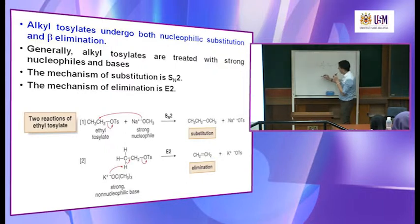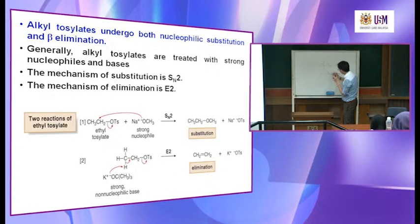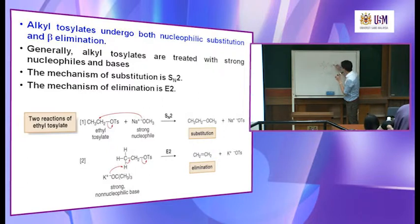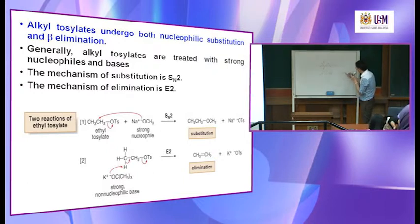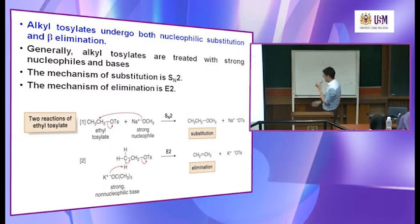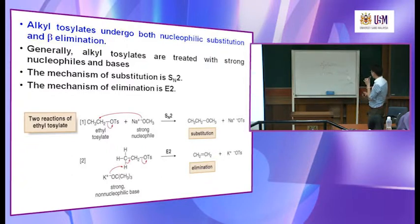Now you have potassium tert-butoxide — K-O-C(CH₃)₃, which is negative. This is going to remove the beta hydrogen, forming a double bond, and the OTs leaves. As an organic chemist, we are always interested in the organic compound formed as the major product; others are just side products.